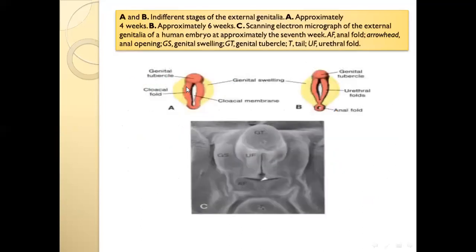At the cranial end of the cloacal folds, a genital tubercle forms. Anteriorly are the urethral folds, and posteriorly the anal folds. At the same time, genital swellings develop. In the male, these are called scrotal swellings. In the female, they form the labia majora. This is the indifferent stage of external genitalia.